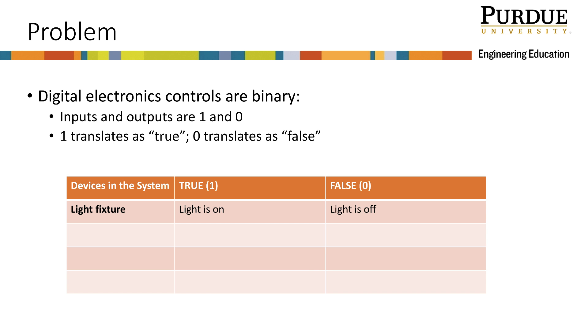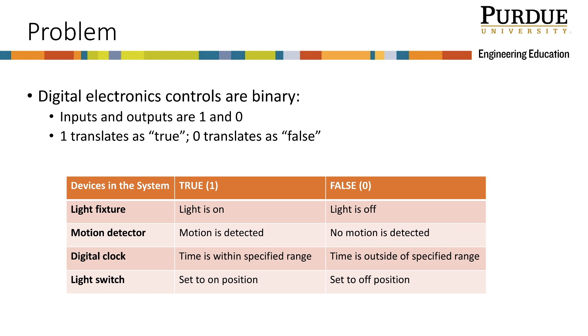The light fixture control is set on true when the light is on and false when the light is off. The motion detector control is true when motion is detected. The digital clock control is set to true when the time is set within a specific range identified by the homeowners. And the light switch control is set to true when the switch is on.